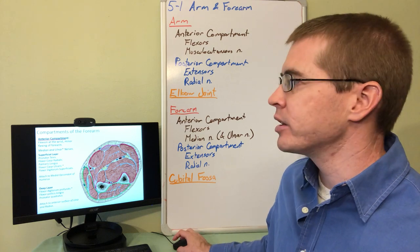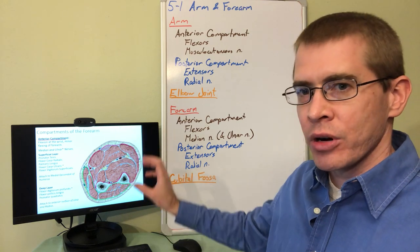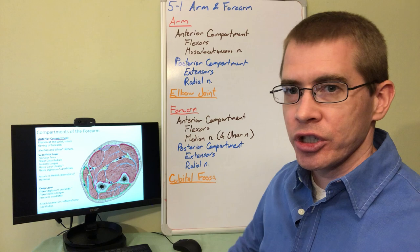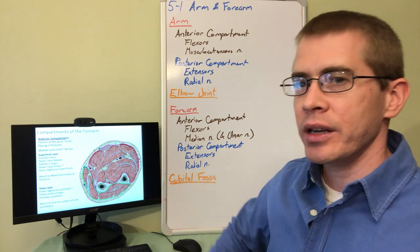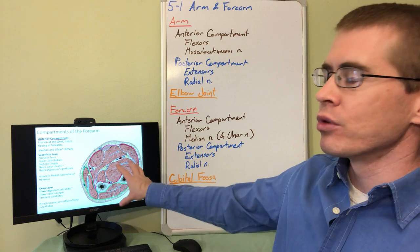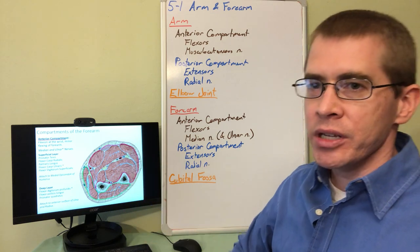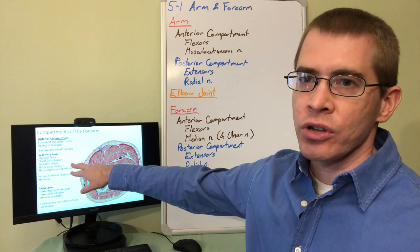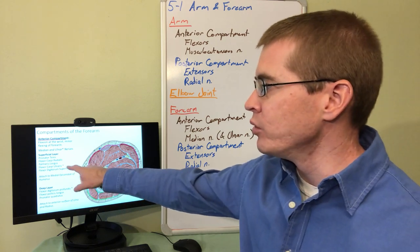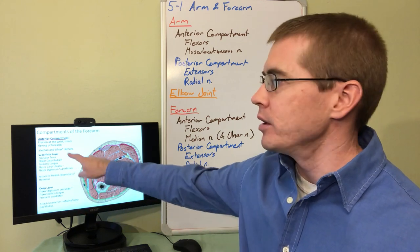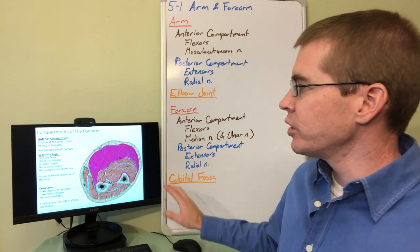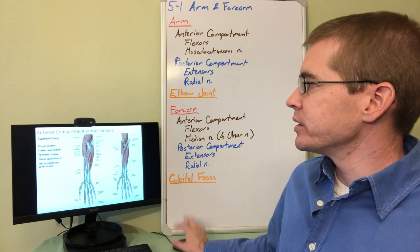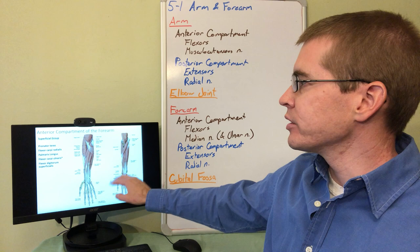So now let's take a look at the compartments of the forearm. Again we're going to have an anterior compartment and a posterior compartment. Here the anterior compartment I'm dividing up into additional sub-compartments, a superficial layer and a deep layer. So the anterior compartment in the forearm is going to be primarily innervated by the median nerve because the median nerve runs right through the center of the forearm. However there are exceptions noted here with the asterisk and that those muscles are innervated by the ulnar nerve. So you can take a look at that more closely.